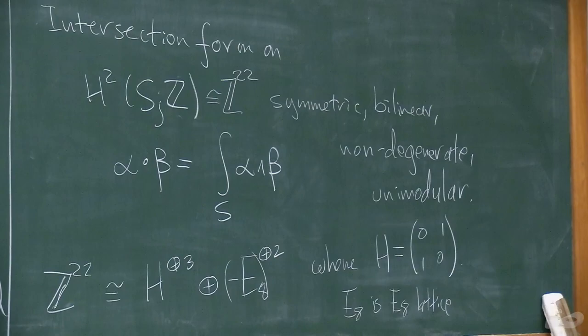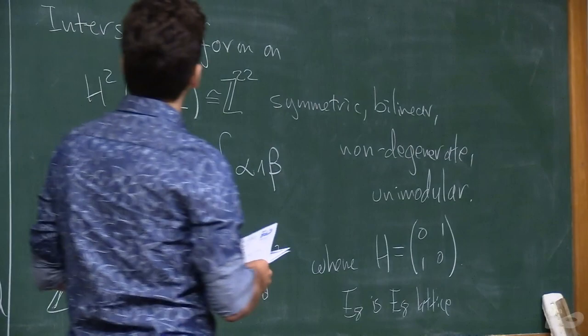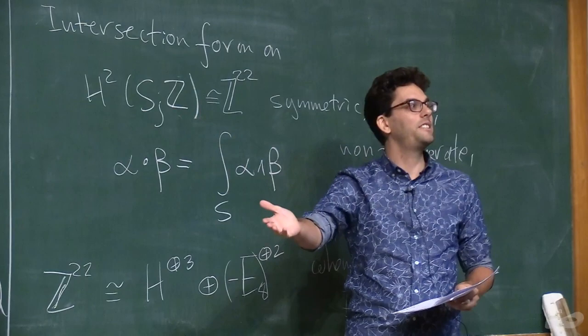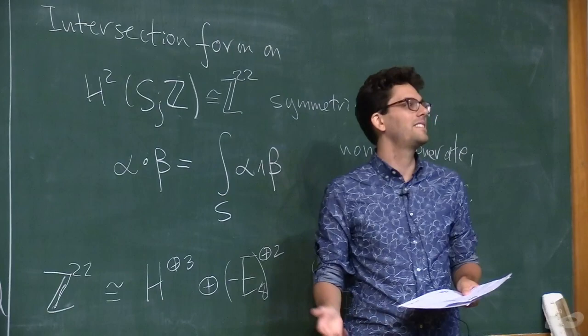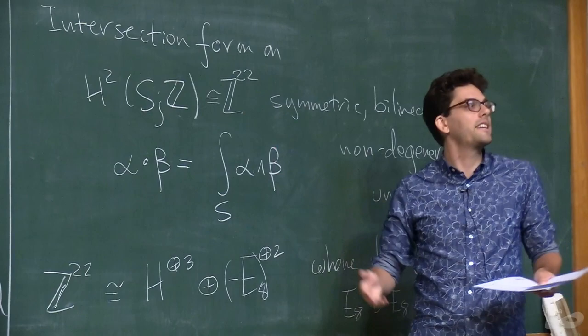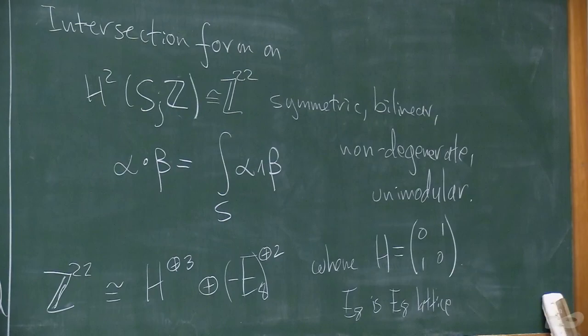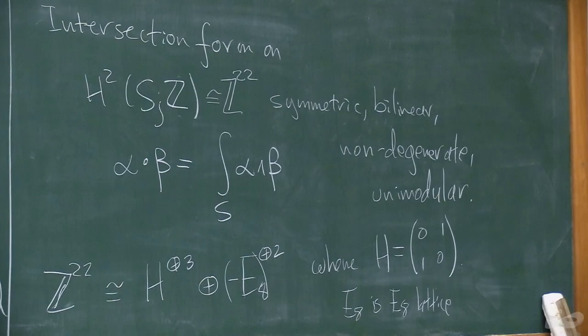Why is it 22? All K3 surfaces can be deformed to each other — they're all deformation equivalent. So topologically they all have the same underlying manifold, which you could call the K3 manifold. You can take a specific example and compute its second Betti number. It also follows from Riemann-Roch and Noether's formula. You can compute the Hodge numbers of the surface.